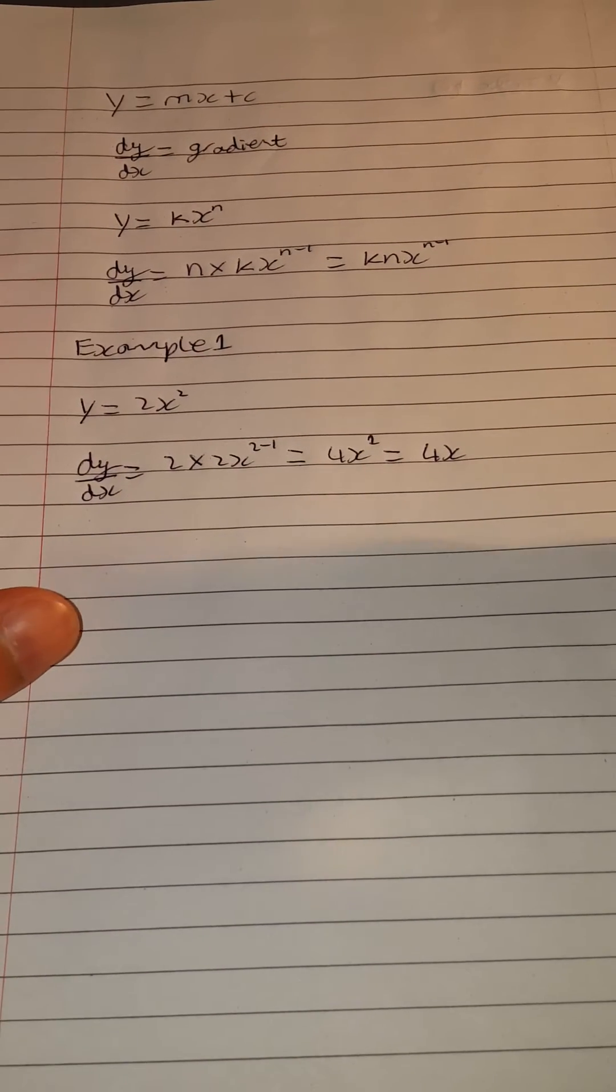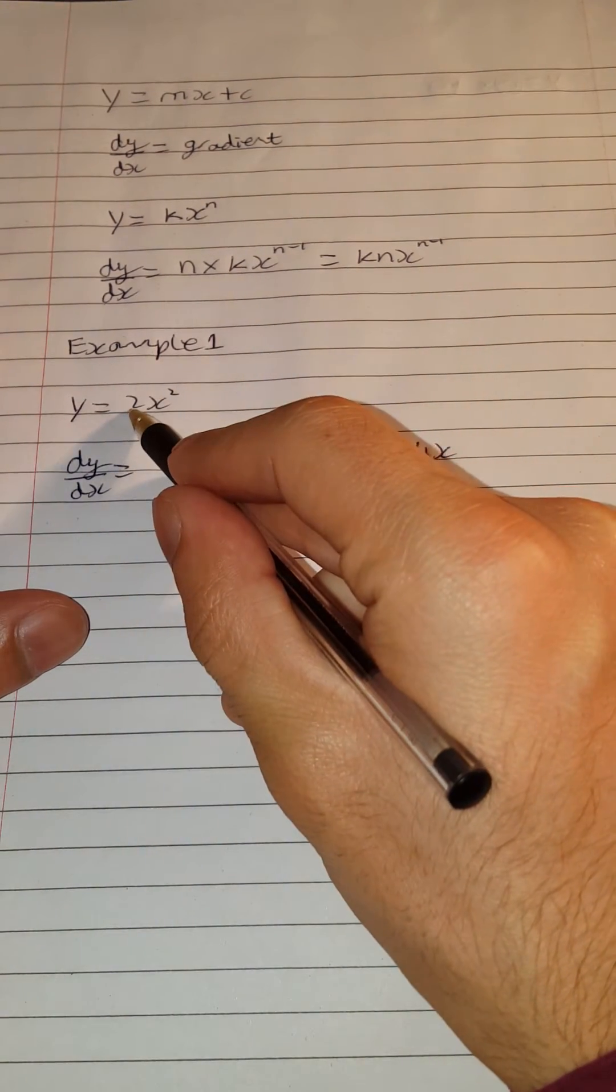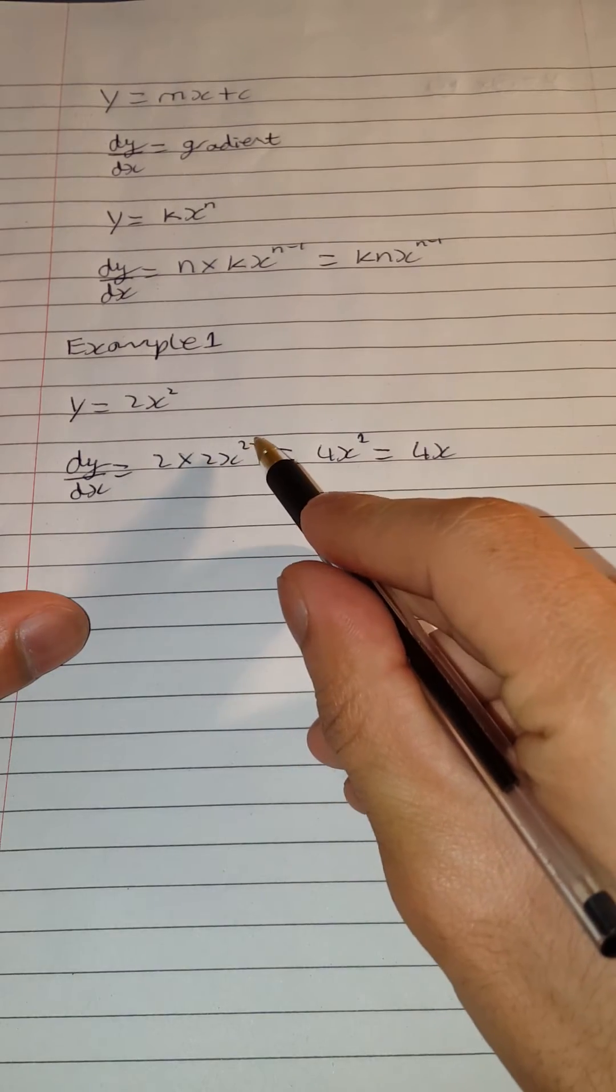So it's actually as simple as that. What I've done is I've multiplied the power next to the 2 here and subtracted 1 from the power.